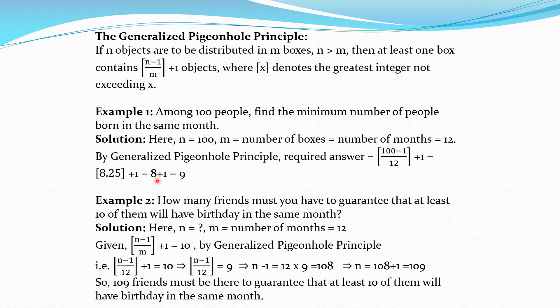This number is the minimum, so it may be greater than 9 also. Now see one more example: how many friends must you have to guarantee that at least 10 of them will have a birthday in the same month?